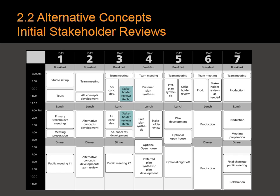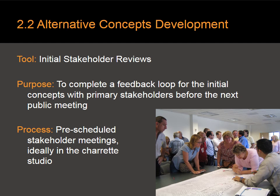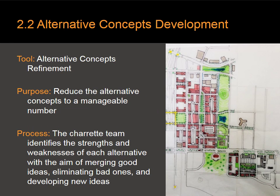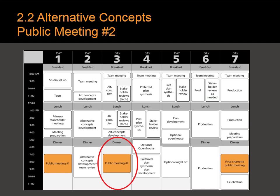When the team has enough to show the stakeholders, they hold stakeholder reviews. Referring to your stakeholder analysis, you will be reviewing with agencies and approval agencies — the Department of Transportation is usually included in these technical reviews. These are called initial stakeholder reviews to give an initial feedback loop with these important gatekeepers. These are pre-scheduled meetings that take place in the Charette Studio. Next, the team works on alternative concept refinements, reducing the alternatives to a manageable number, identifying the strengths and weaknesses of each. There might be three alternatives still moving through to the next public meeting or open house.